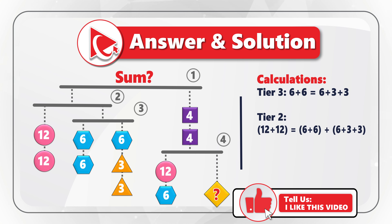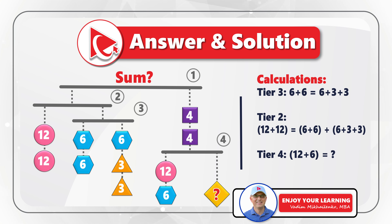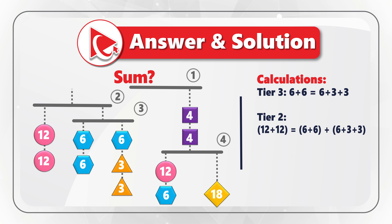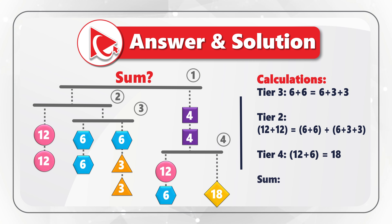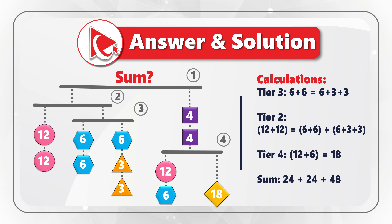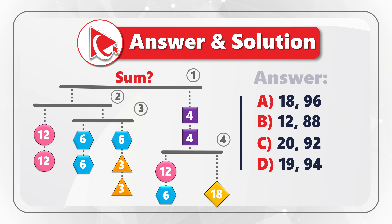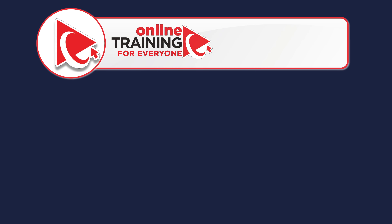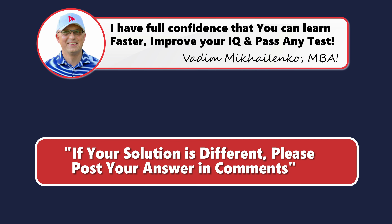Knowing this logic, we can calculate the missing value on tier 4. Since tier 4 needs to remain in balance, 12 plus 6 equals 18 — the missing diamond value. The total sum is calculated as all numbers combined: tier 2 plus tier 3 equals 24 plus 24, plus 48 on the right side of tier 1, which equals 96. So the correct answer is Choice A — 18 and 96. Did you get a different answer? Please post your answer and solution in comments.